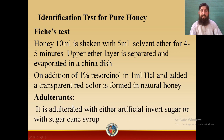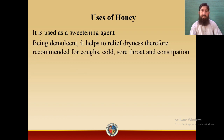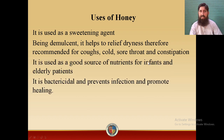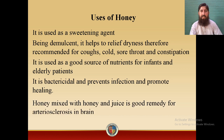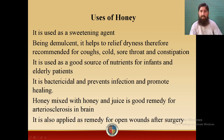Adulterants: honey is adulterated with either artificial invert sugar or with sugar cane syrup. Uses of honey: it is used as a sweetening agent. Being a demulcent — a compound with a soothing effect on mucous membranes — it helps relieve dryness and is therefore recommended for coughs, colds, sore throat, and constipation. It is a good source of nutrients for infants and elderly patients. It is bactericidal, prevents infection, and promotes healing. Honey mixed with juice is a good remedy for arteriosclerosis in the brain, and it is also applied to open wounds after surgery due to its bactericidal effect.